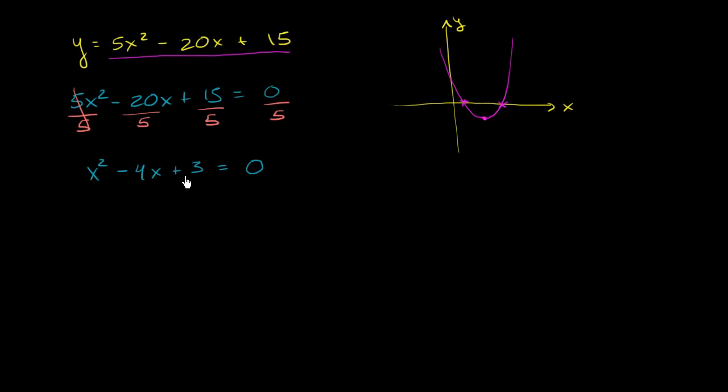And the one that probably jumps out at your mind, and you might want to review the videos on factoring quadratics if this is not so fresh, is negative 3 and negative 1 seem to work. Negative 3 times negative 1 is 3. Negative 3 plus negative 1 is negative 4. So this will factor out as x minus 3 times x minus 1. And on the right-hand side, we still have that being equal to 0.